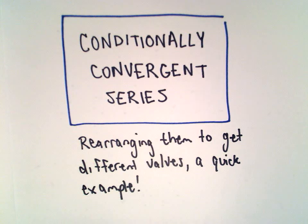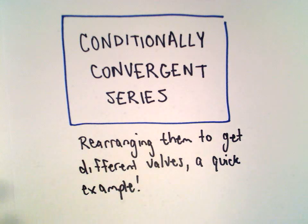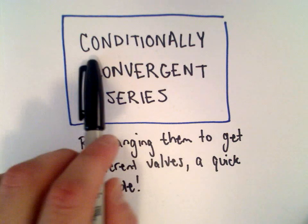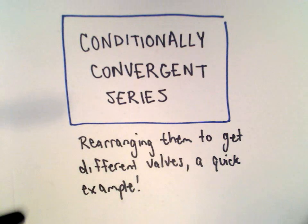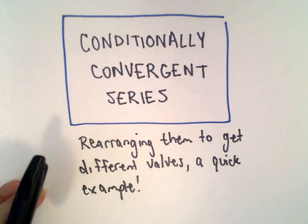In a separate video I talked about how it was pretty cool that you could look at a conditionally convergent series and actually rearrange the terms to get different values. We're going to prove in a different video that you can take a conditionally convergent series and rearrange the values to get any real number that you want, which kind of blows my mind.